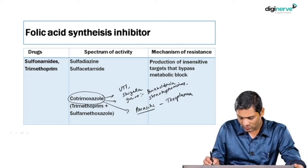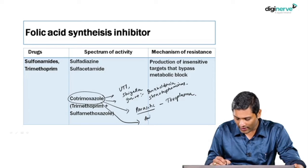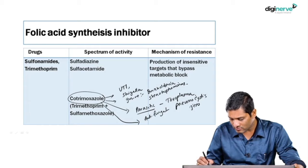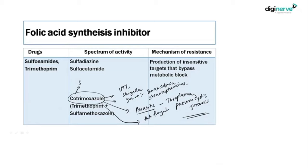Cotrimoxazole also has anti-parasitic action (e.g., Toxoplasma) and anti-fungal action — the classical example being Pneumocystis jirovecii. The most popular commercial name for cotrimoxazole is Septra.